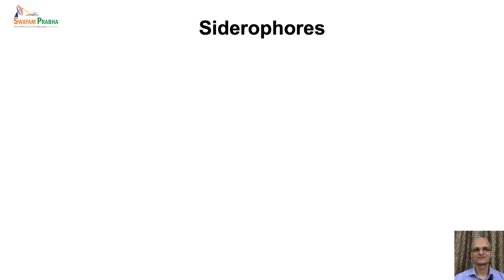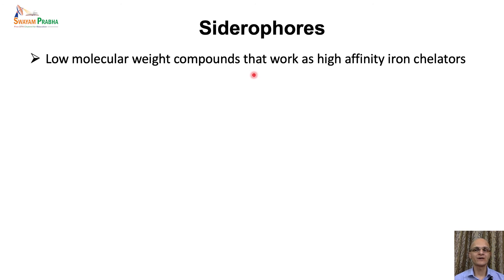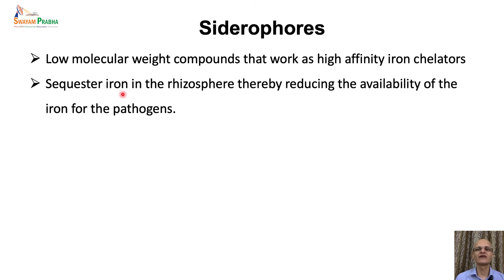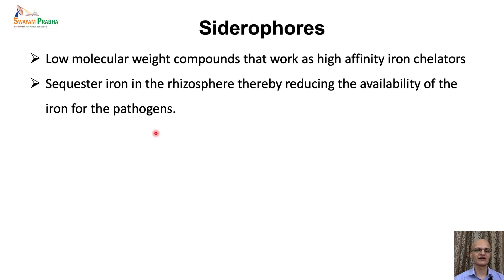Siderophores are low molecular weight compounds that work as high-affinity iron chelators. When present in the rhizosphere, they sequester available iron and release it as per the requirement of the plant. This reduces the availability of iron for the growth of pathogens in the rhizosphere — when all the iron is absorbed by siderophores, the pathogen will not be able to grow. However, iron will be released slowly for the plant's growth, so the plant will not suffer from chelation of iron due to siderophores.